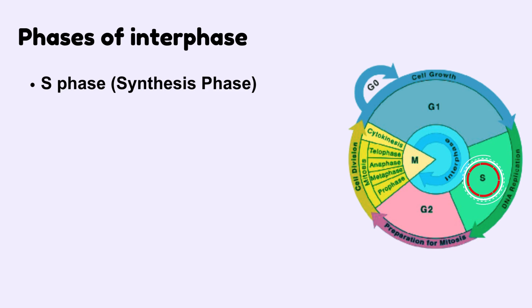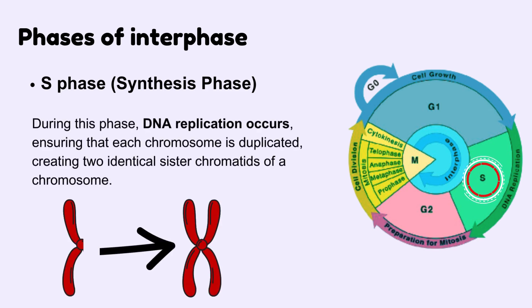S phase, also known as synthesis phase. During this phase, DNA replication occurs, ensuring that each chromosome is duplicated, creating two identical sister chromatids of a chromosome.